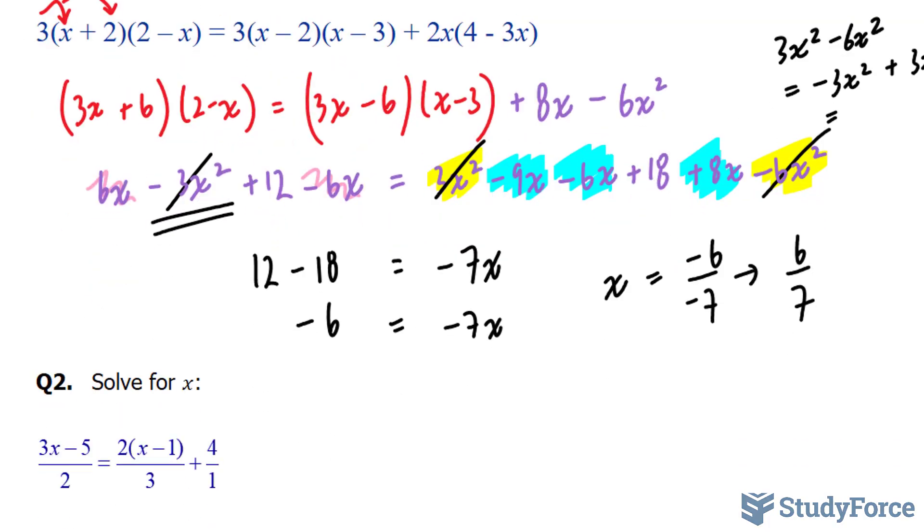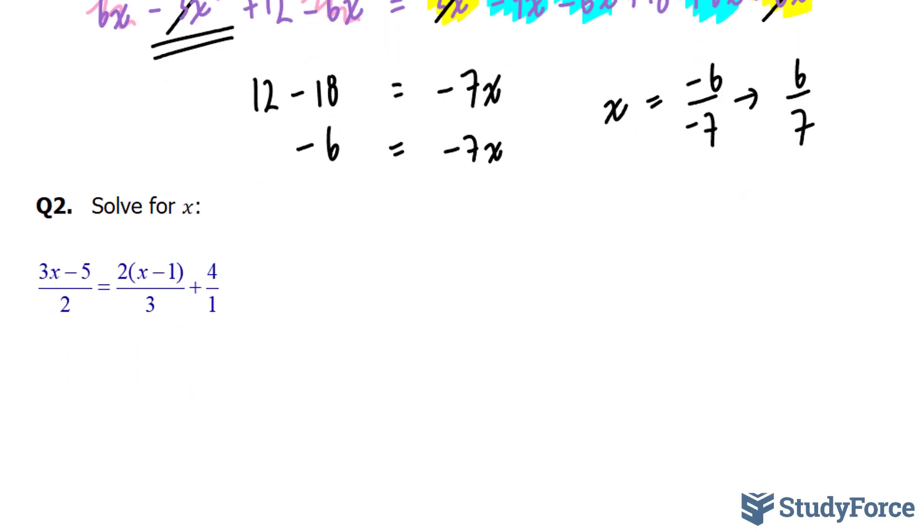Moving on to question number 2, we have the following equation. Notice that there are three quotients here, three terms with fractions. The first thing that you have to do is find a common denominator. Now to do that, we're going to take 2, 3, and 1, all three denominators, and multiply them together.